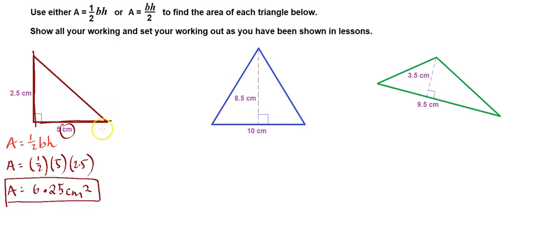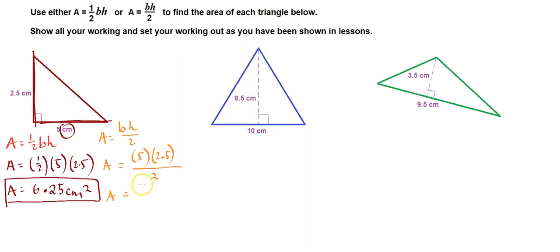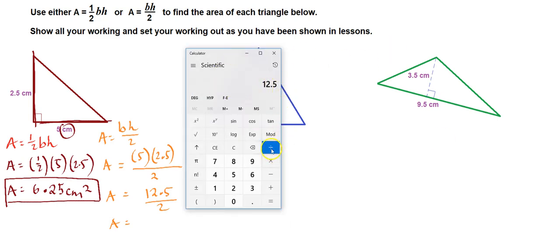We could get the same outcome by using the other formula. Area equals base times height divided by 2. Let's plug in what we know. The base was 5, and the height was 2.5. So 5 times 2.5, and the answer gets divided by 2. Let's use our calculator: 5 times 2.5 equals 12.5, and that has to be divided by 2. So 12.5 divided by 2 equals 6.25.